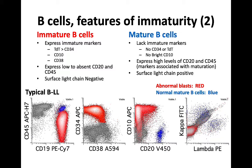When it comes to mature B-cells, they'll have the opposite immunophenotype and lack immature markers — mature B-cells shouldn't be positive for CD34 or TDT. By contrast, they're going to express high levels of more mature markers like CD20 and CD45, and they are typically surface light chain positive.